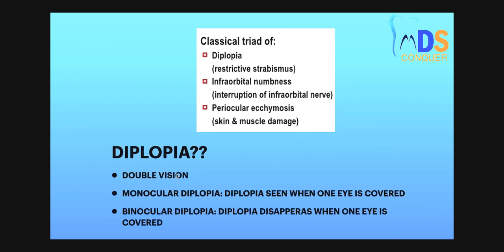What is diplopia? Diplopia is double vision. There are two types of diplopia: monocular and binocular. In case of monocular diplopia, diplopia is seen when one eye is covered. So when both eyes are open, the diplopia is not seen — but when one eye is covered, the diplopia is seen.